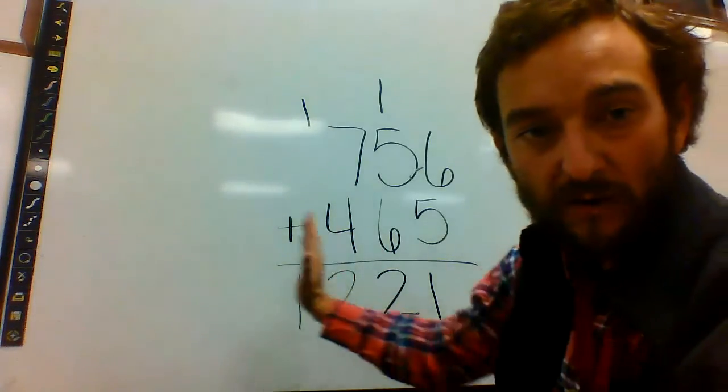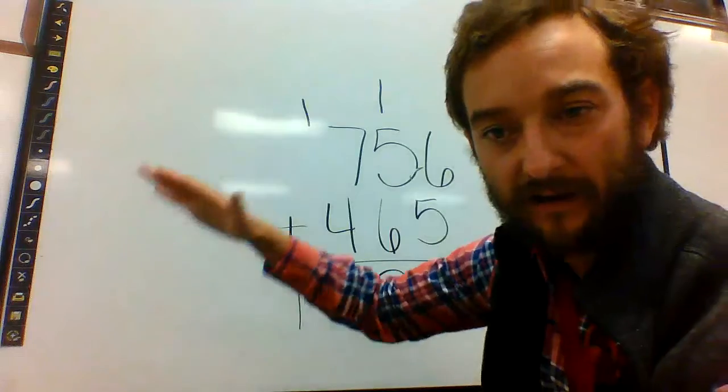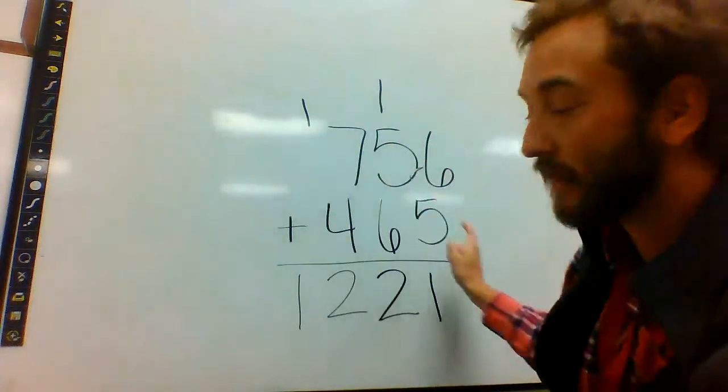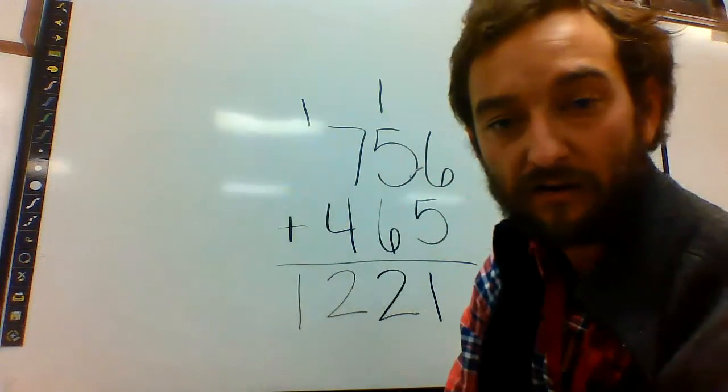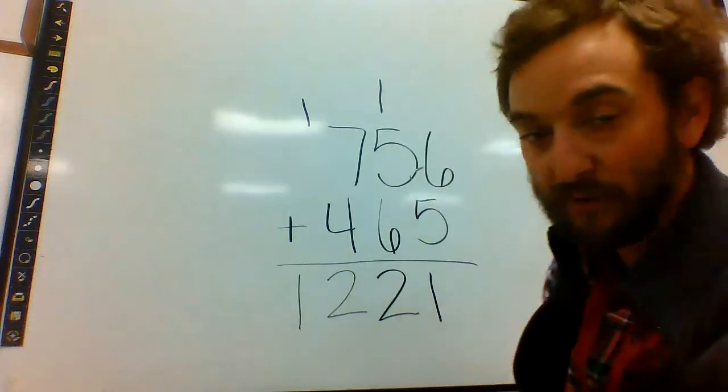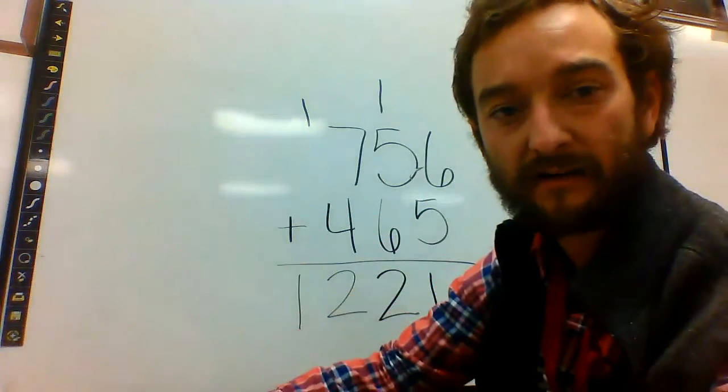You move all the way to the end until you're out. And then everything you have left just drops straight down. Make sure you're carrying. Carrying those ones is important. You can't just do 6 plus 5 is 11 and put 11 down there. That 10 has to go over to the next side.